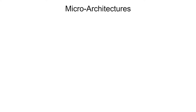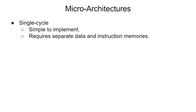There are three main types of ARM microarchitectures: single-cycle, multi-cycle, and pipeline. Single-cycle executes each instruction in one clock cycle and is relatively simple to implement, but is limited by the slowest instruction in a program and requires separate instruction and data memories, which is generally unrealistic.